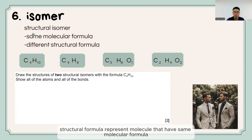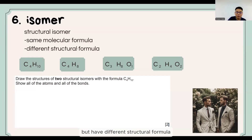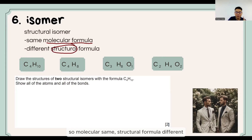Structural isomers represent molecules that have the same molecular formula but have different structural formulas. So the molecular formula is the same, but the structural formula is different.